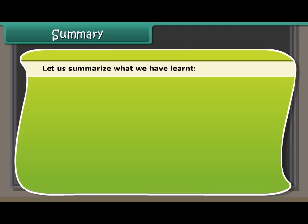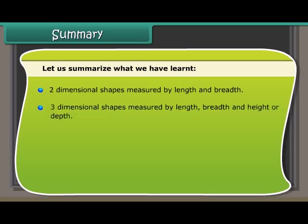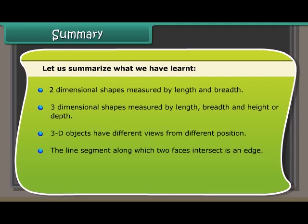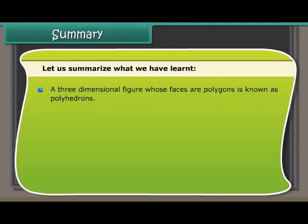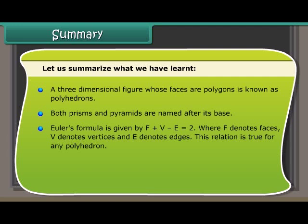Summary: Two-dimensional shapes are measured by length and breadth. Three-dimensional shapes are measured by length, breadth, and height or depth. 3D objects have different views from different positions. An edge is the line segment along which two faces intersect. Vertices are the points at which three or more faces meet. A three-dimensional figure whose faces are polygons is known as a polyhedron. Both prisms and pyramids are named after their bases. Euler's formula is given by F + V − E = 2, where F denotes faces, V denotes vertices, and E denotes edges. This relation holds true for any polyhedron.